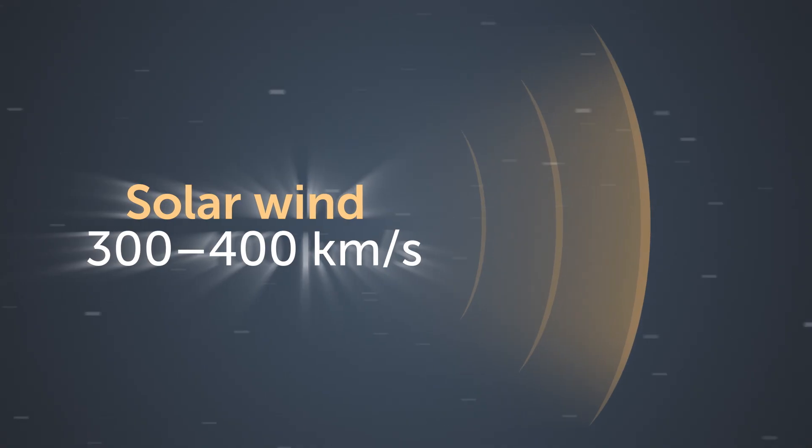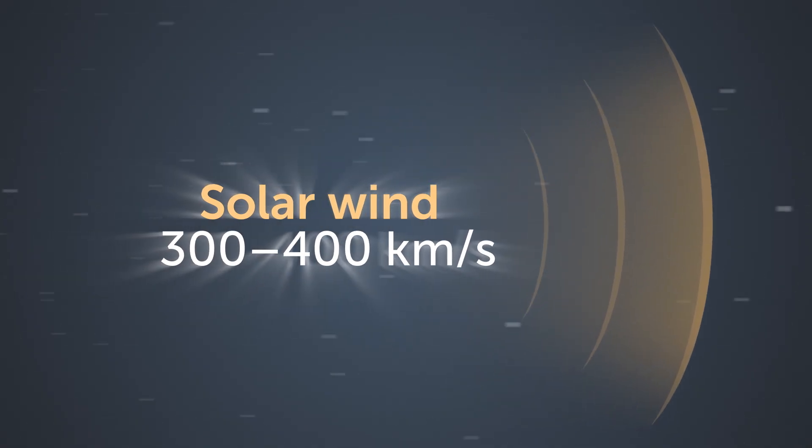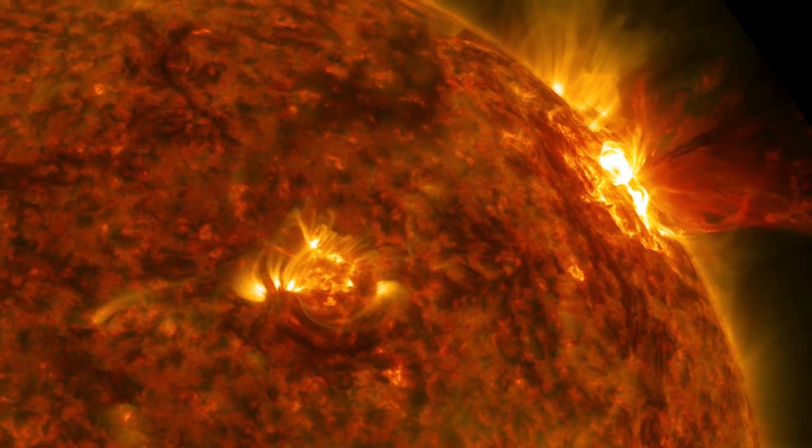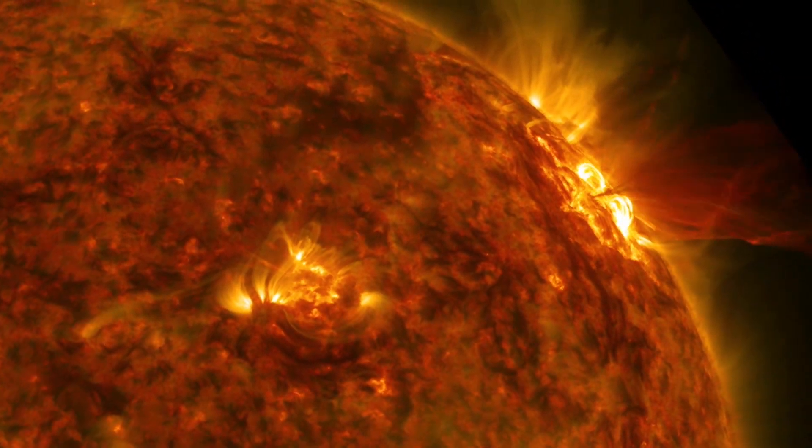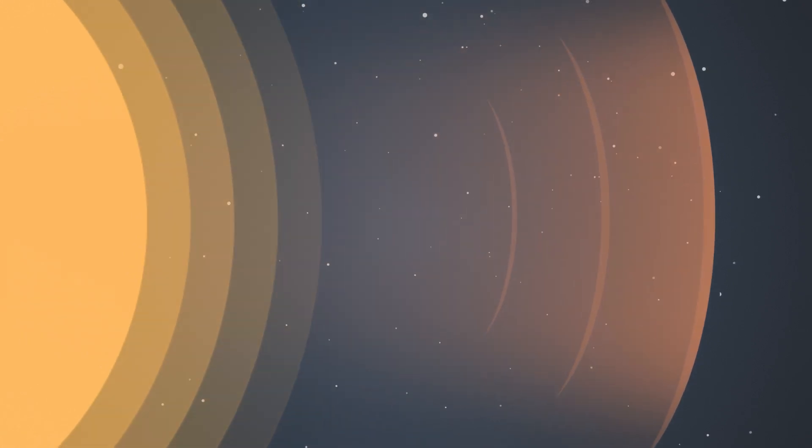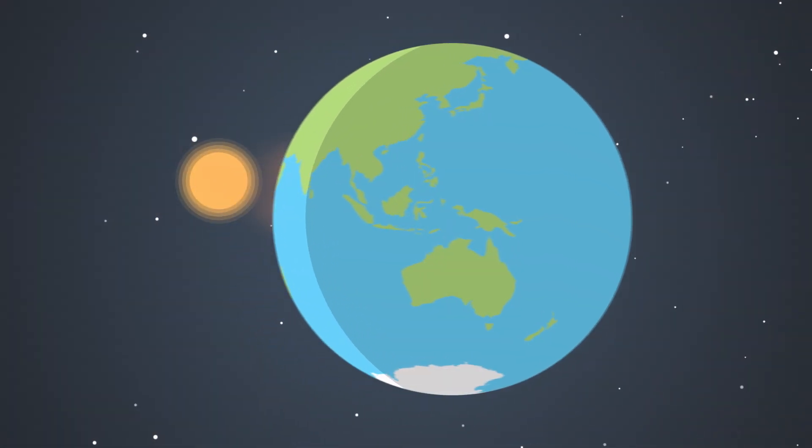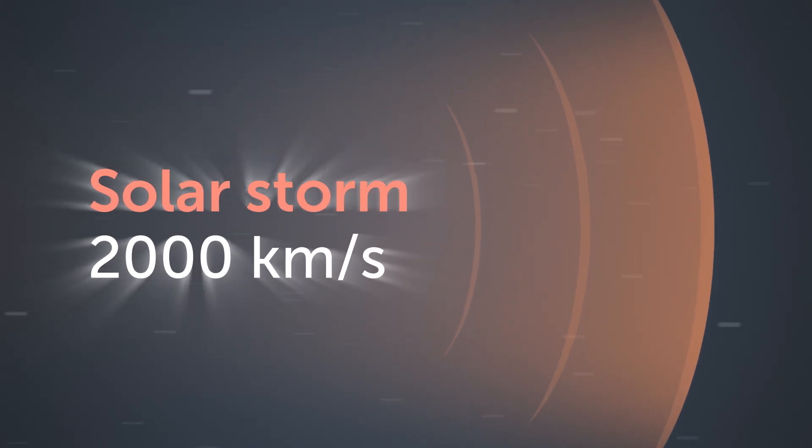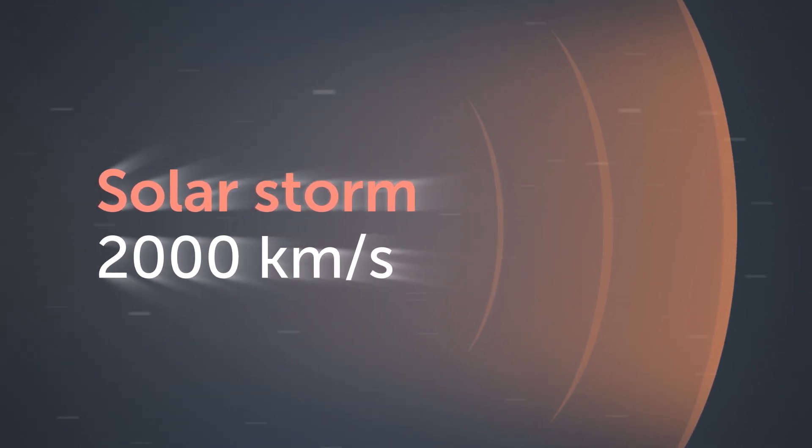When the sun is relatively inactive, the solar wind travels at about 300 to 400 kilometres per second. When the sun is more active, eruptions can occur which release dense plasma or plasma clouds into the solar wind. These plasma clouds carry magnetic field structure from the sun to the earth at speeds up to 2,000 kilometres per second and that's what we call a solar storm.